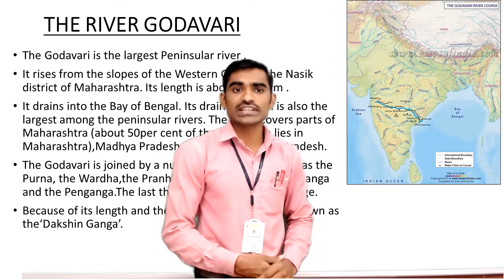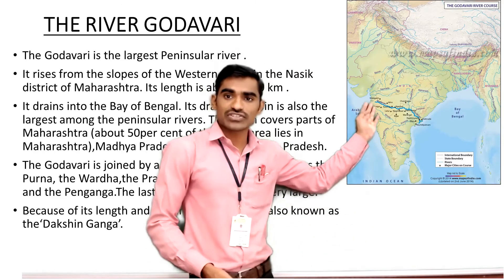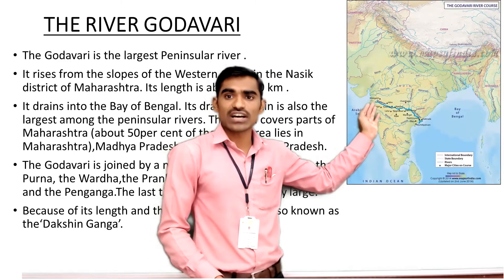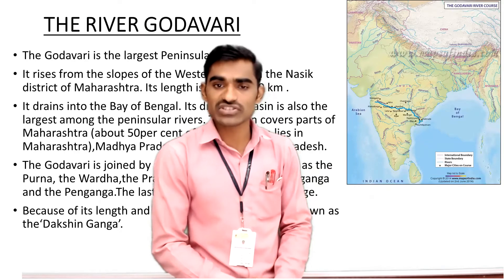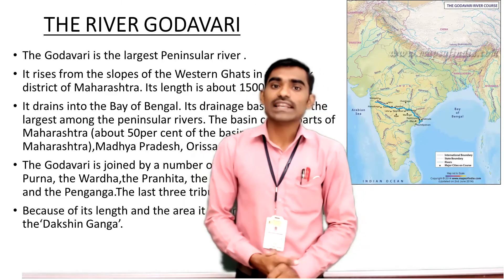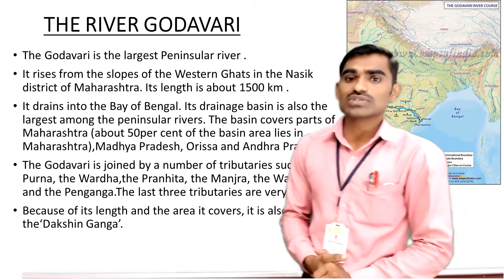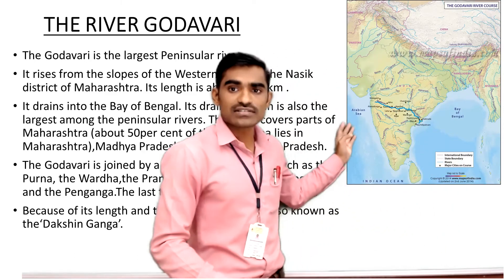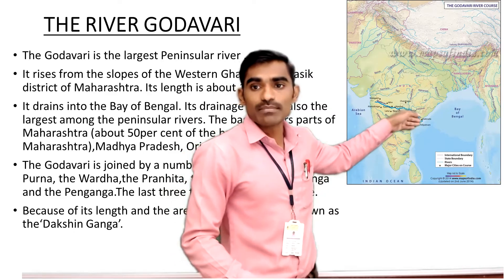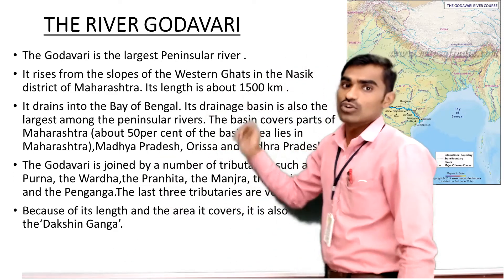It has its origin in the Nashik district of Maharashtra — towards the west or northwest side of Maharashtra. In that Nashik district, in the Western Ghats, you have the origin of this Godavari River. The total length of the Godavari River is near about 1500 kilometers. It travels towards the east side and meets the Bay of Bengal after traveling for near about 1500 kilometers.